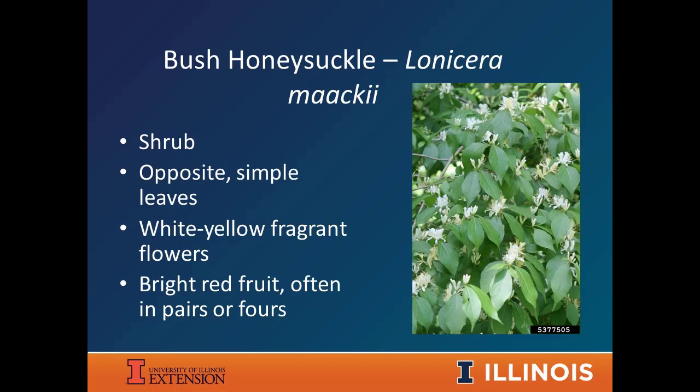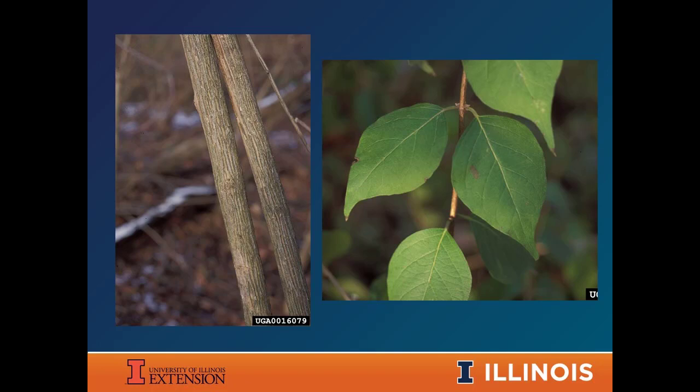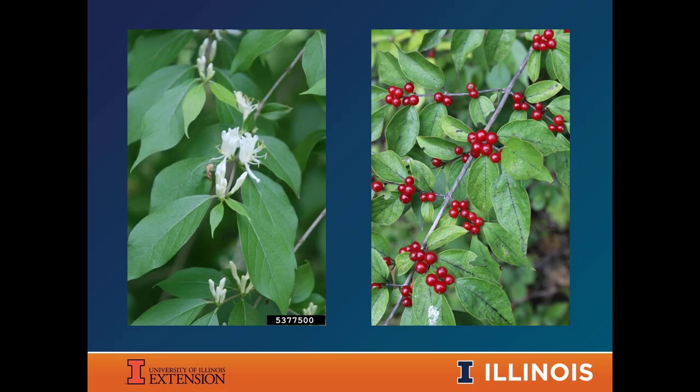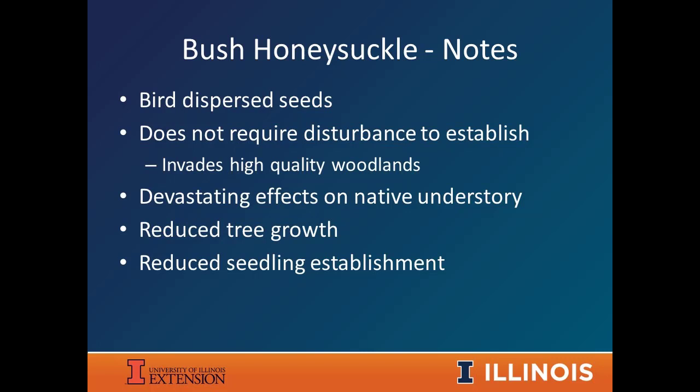Bush honeysuckle has opposite simple leaves — some are pointed, some are rounded. They typically have whitish to pinkish somewhat fragrant flowers, and the fruit can be bright red or orangish depending on the species. In spring when it flowers, it's almost unmistakable with those honeysuckle-like flowers, and it forms big dense infestations carpeting the understory. If you're unsure, look for that opposite leaf arrangement and the light, stringy bark. Even in winter it's easy to identify by its arching stems, and if you cut it open, the pith is hollow.